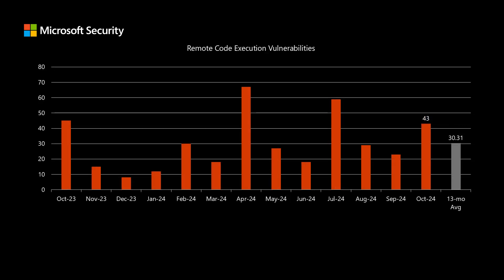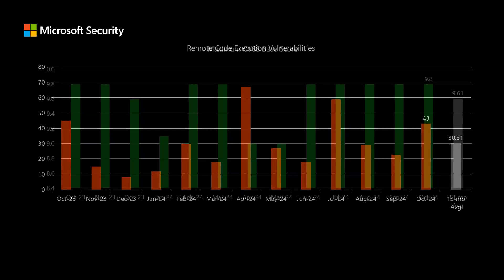Of those 118 total CVEs, 43 of them fall into the remote code execution impact. These are the type of vulnerabilities that typically provide the most risk. We've been averaging just over 30 per month.